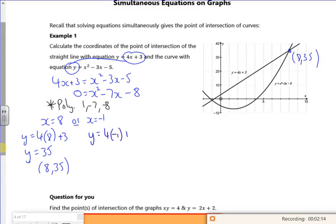And 4 lots of minus 1 plus 3. So y is minus 1, minus 1 comma minus 1. And that looks like minus 1 minus 1, doesn't it?